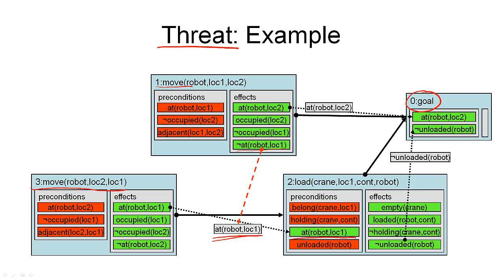This is what is called a threat. We have an action that may possibly occur in parallel with a causal link, and that has an effect that is complementary to the condition we're trying to protect in the causal link. And in this case, there's a simple way to get rid of this threat, namely to introduce an additional ordering constraint that says action number one must come after action number two. In which case, the action with the potentially harmful effect cannot be in parallel to the causal link that protects this condition. So the insertion of the ordering constraint removes the threat, and that is what is called a resolver for this threat.